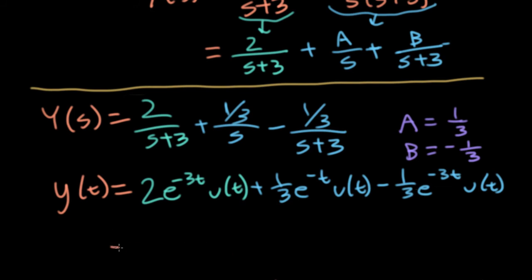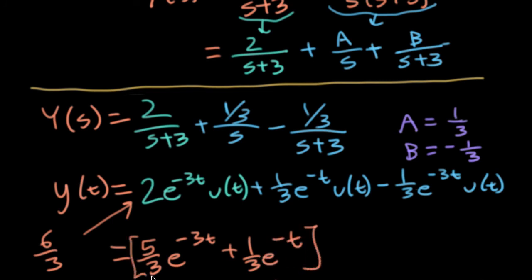So at this point, let me go ahead and simplify things. 2 here is the same as 6 over 3. So if I were to subtract a third from that, I would get 5 thirds e to the minus 3t. And I'll deal with this u(t) in a moment. And then I'll have plus 1 over 3 e to the minus t. And I'll factor out the u(t) out of everything.